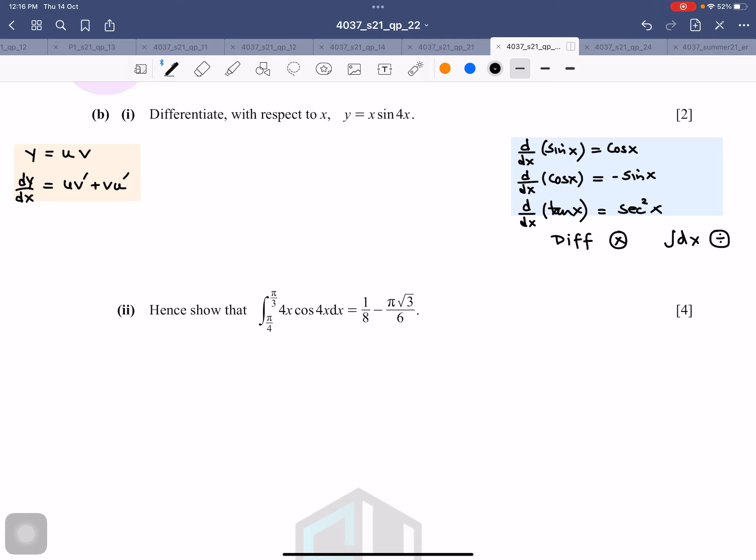So if I start with this, I'll say y equals x·sin(4x). Therefore, u is x, u' is 1. v is sin(4x). Therefore, v' is 4cos(4x). Multiply this way, multiply this way, and therefore, y' or dy/dx is 4x·cos(4x) plus 1 times sin(4x). That is the first thing.